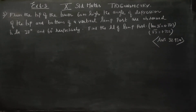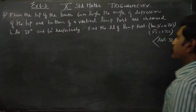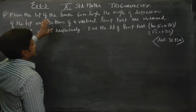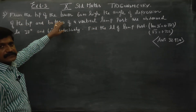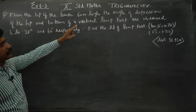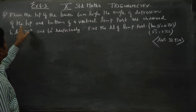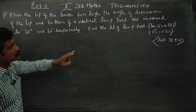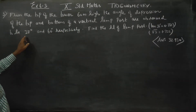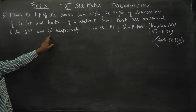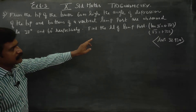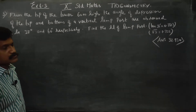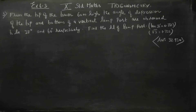Hello, class 10 standard students. Exercise number 6.3: From the top of a tower 60 meters high, the angle of depression of the top and bottom of a vertical lamp post are observed to be 38 degrees and 60 degrees. Find the height of the lamp post.